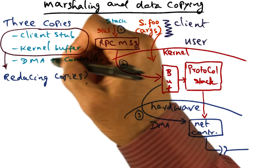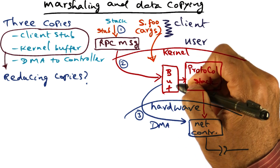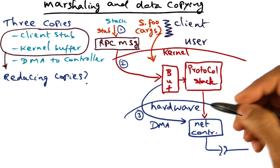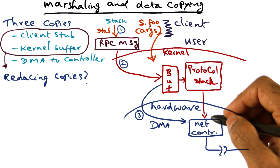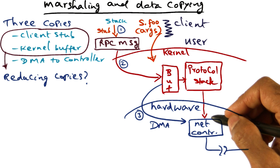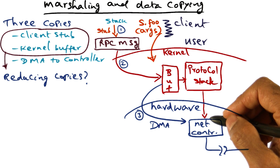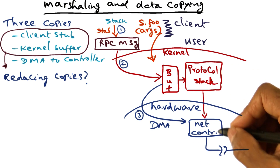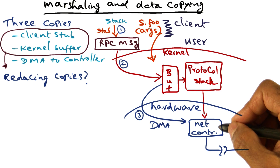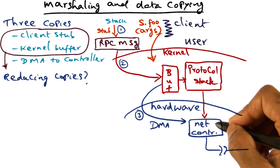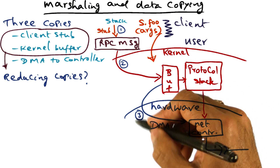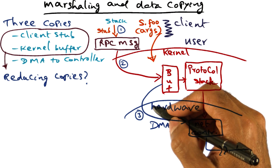The third copy — moving the bits from system memory into the network controller — is a hardware action and is unavoidable, so we are going to live with it. Unless the network controller is completely redesigned, if it needs to DMA the bits from system memory into its internal buffer before putting them on the wire, then this third copy is inevitable. So we live with it, but we would like to see if we can reduce the number of copies involved.